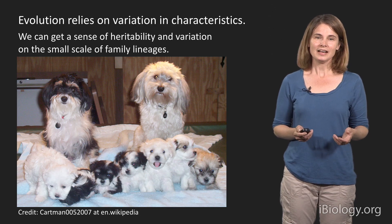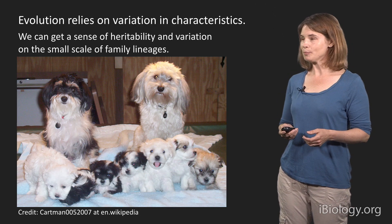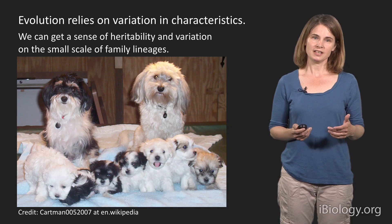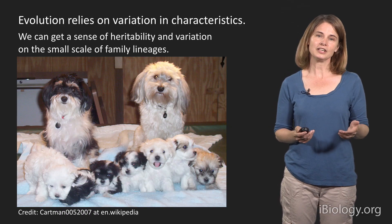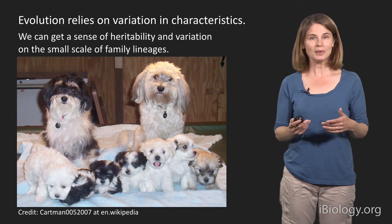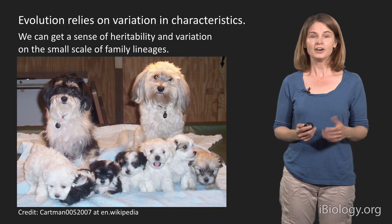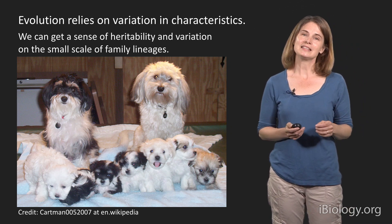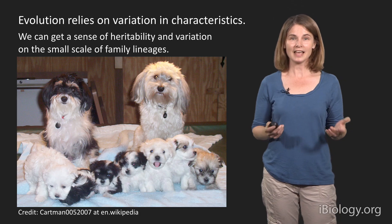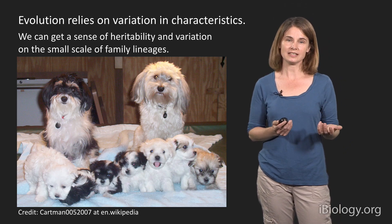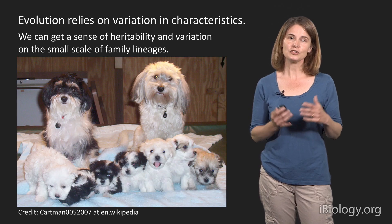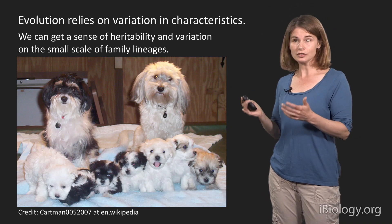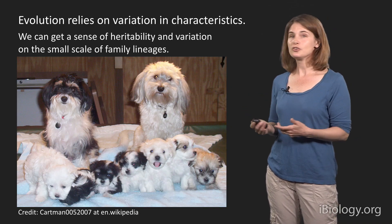Here's an example: a picture of a pair of dogs and their puppies, where you can really see the variation in characteristics even in one generation. If you look at the parents and the pups, you can see some of the puppies look like one parent with pure light fur, others look like the other parent with very dark fur around the face, and yet other puppies in the litter have a mix of the characteristics of those two adults. You can get a sense of variation that can be explored and capitalized through evolutionary time.